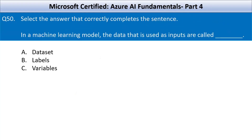Next question: select the answer that correctly completes the sentence. In a machine learning model, the data that is used as input are called what? Your options are data set, labels, or variables. Input data is called variables. A data set refers to the entire collection of data used for training or testing the model. Labels refers to the output or target variables that the model is trying to predict or classify based on the input variables.